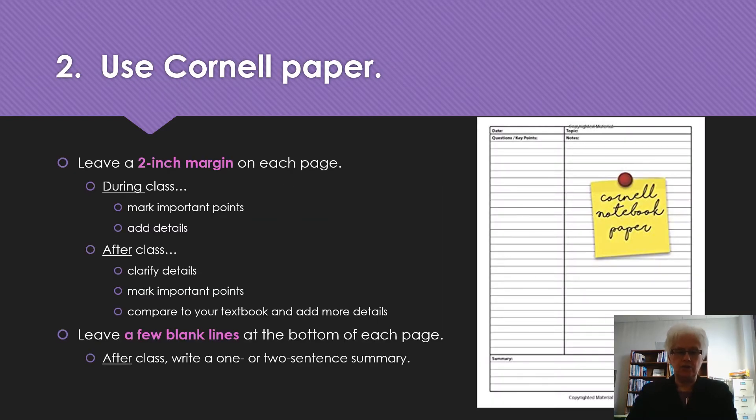Second suggestion: use Cornell note paper. On this paper, you're going to leave a two-inch margin on each page. During class, you'll take your notes in the larger section. But you might occasionally be able to add some details in the two-inch margin or put a star or an arrow next to points that seem important. But after class is when you really use this two-inch margin space.